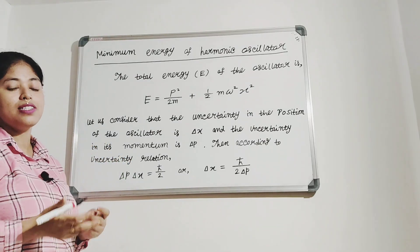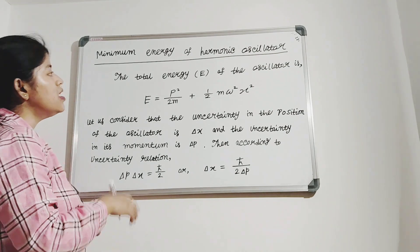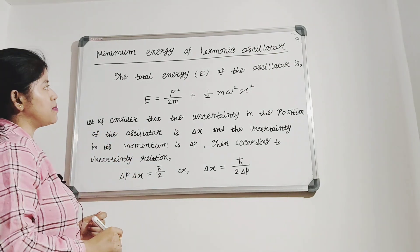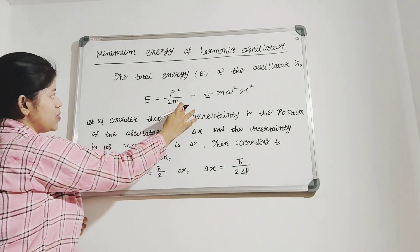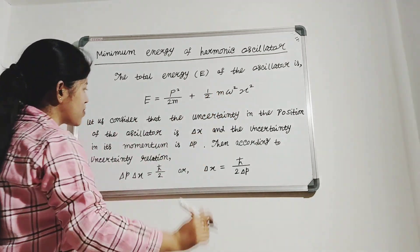Now we are going to calculate the minimum energy of a harmonic oscillator with the help of the uncertainty principle. So the total energy of the oscillator is E, which equals p squared by 2m plus half m omega squared x squared.